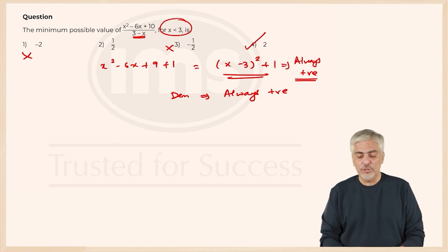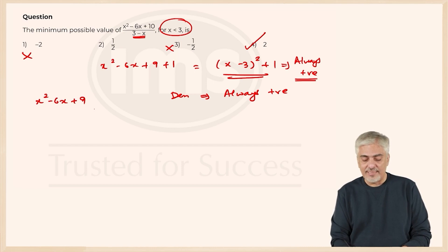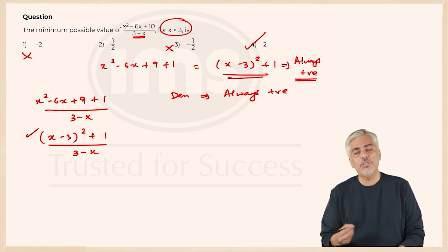But the great approach to this question was this, pay attention. Write the numerator x² minus 6x plus 9 plus 1 upon 3 minus x, this is x minus 3 the whole square plus 1 upon 3 minus x. x minus 3 the whole square is same as 3 minus x the whole square upon 3 minus x plus 1 upon 3 minus x.